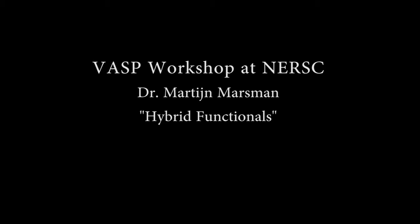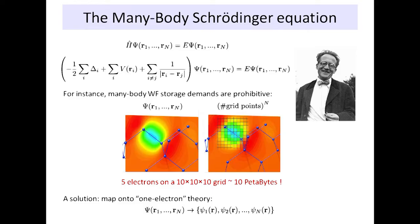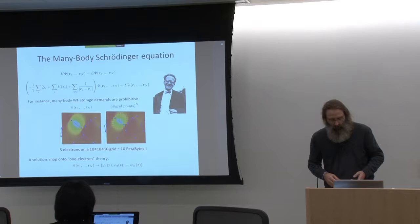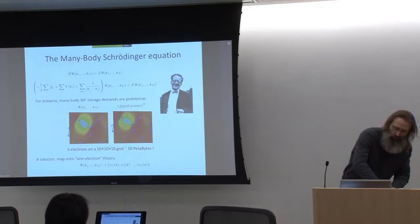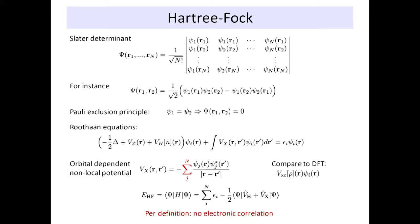So hybrid functionals, let's go there. We did some of this to some degree yesterday. One of the key things that we do is map our all-electron problem onto a one-electron description. Yesterday we talked about DFT. Another one-electron theory would be Hartree-Fock theory.